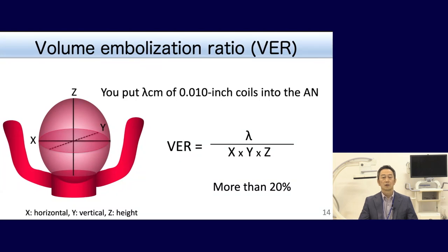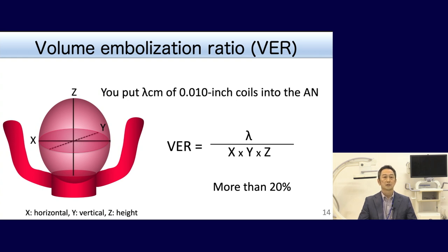How many coils are needed for obliteration of an aneurysm? Volume embolization ratio is a good index for setting a goal. If you use coils of a given length, the VER can be calculated by formula. More than 20% would be needed for adequate obliteration.